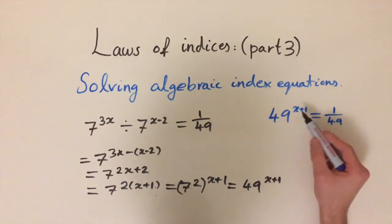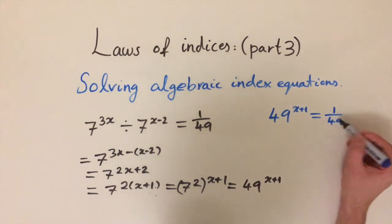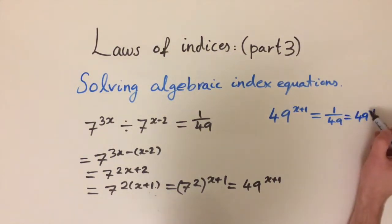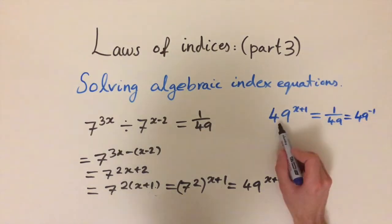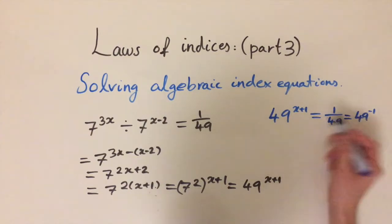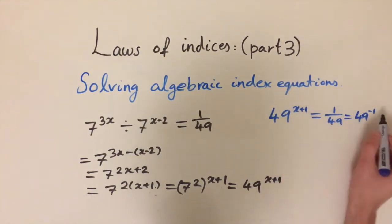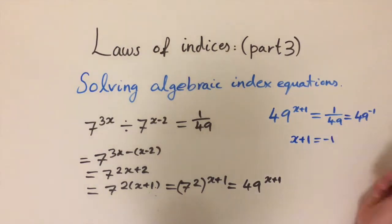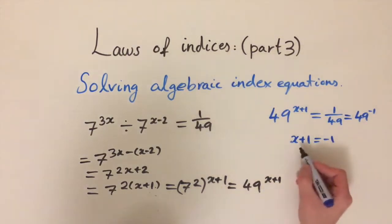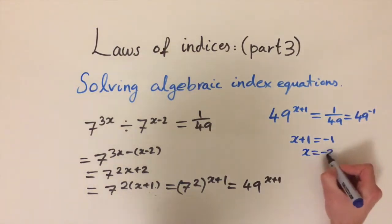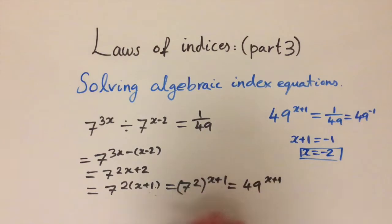We want to get everything into the same base — base 49. We can write 1 over 49 as 49 to the power of minus 1, since flipping a fraction is the same as raising to minus 1. Now both sides have base 49 raised to some exponent. We ignore the base and just compare the exponents: x plus 1 equals minus 1. This is a simple linear equation — subtract 1 from both sides to get x equals minus 2.